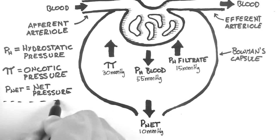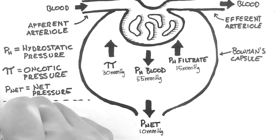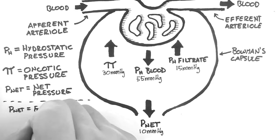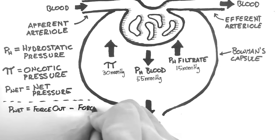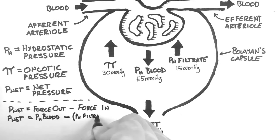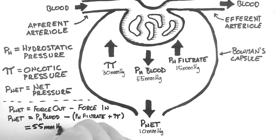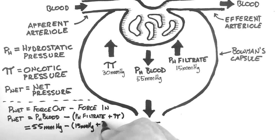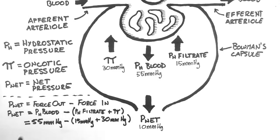Now I'll show you how that net pressure is calculated from those other pressures. The net pressure is the force out minus the force back into the capillaries. So if we substitute in our pressures, this gives us the hydrostatic pressure of blood minus the sum of the hydrostatic pressure of filtrate and the oncotic pressure. And then substituting our actual values into the equation and then solving gives us 10 mmHg.